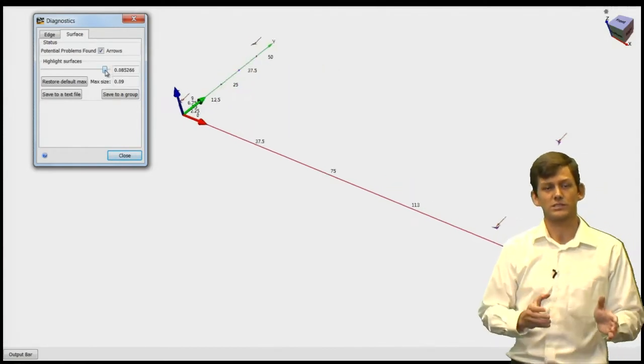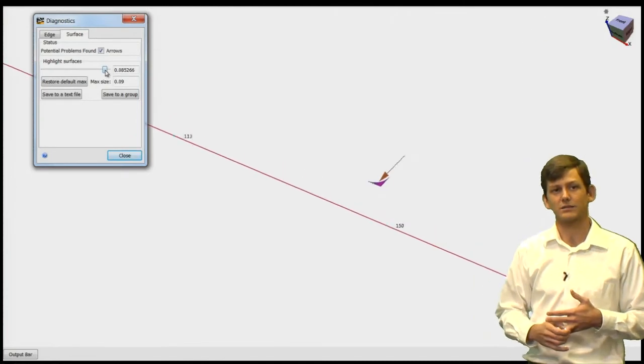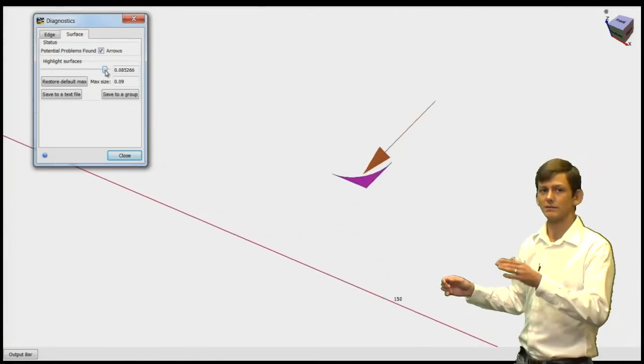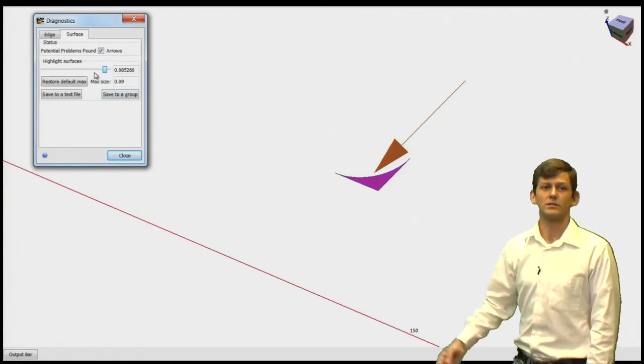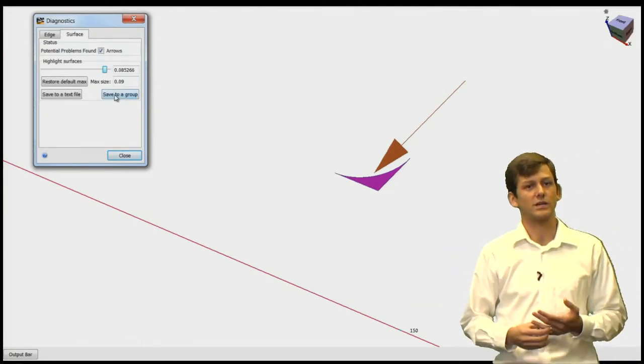Any changes here with the slider bar aren't actually going to impact the mesh, but you can see that by moving it a little bit, that large surface disappears and we still have this one small surface here that could be problematic for meshing.